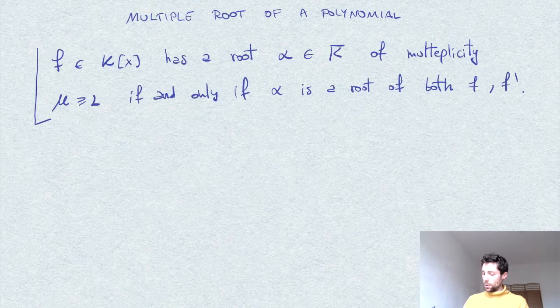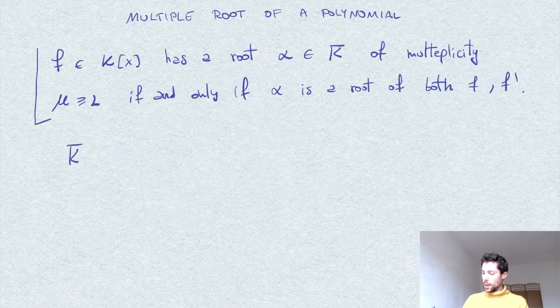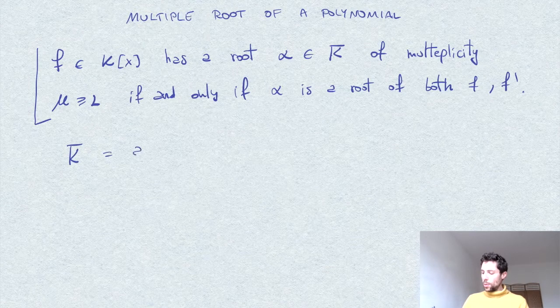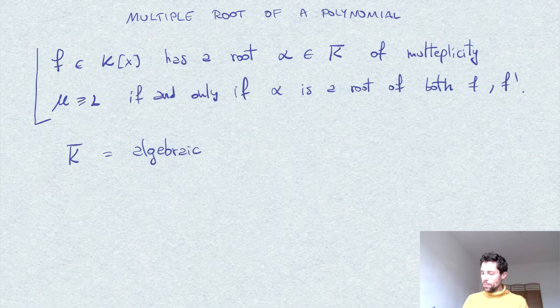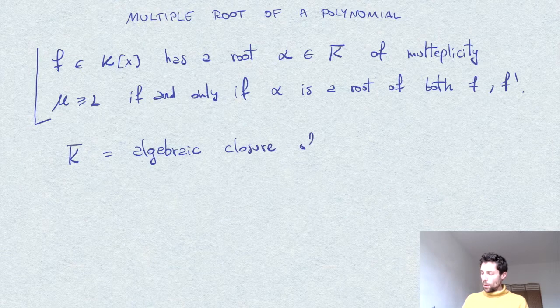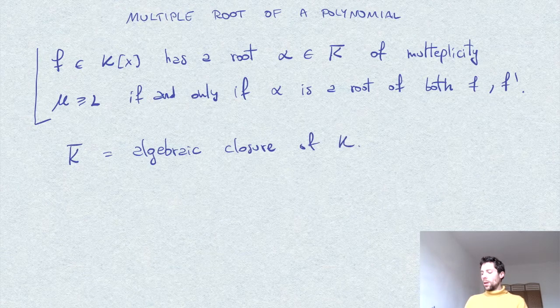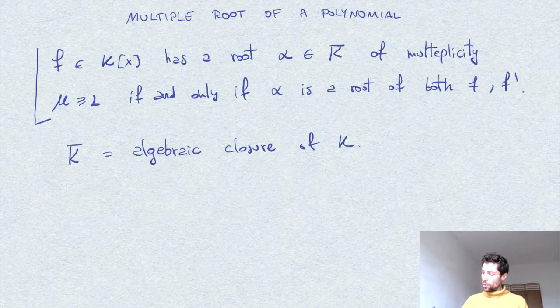First of all, so I denote, as I said, by k bar the algebraic closure of k. Now, if you don't know this definition of multiple root, root of some multiplicity,